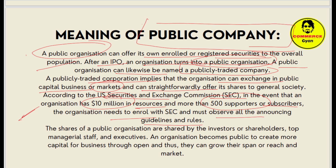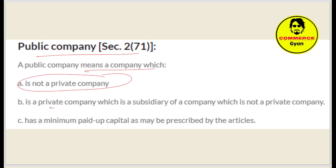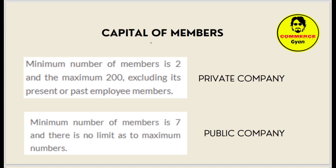The shares of public organizations are held by investors, shareholders, top managerial staff, and executives. An organization becomes public to create more capital for business through open markets and thus grow its market reach. According to American law, a public company means: a company which is not a private company; a private company which is a subsidiary of a company that is not a private company; or one that has a minimum paid-up capital as prescribed by its articles.